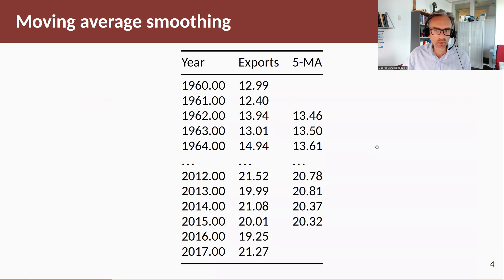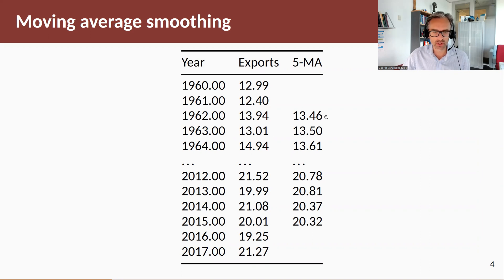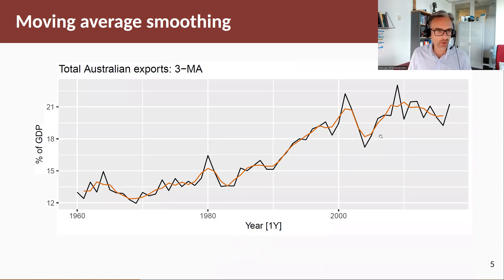Suppose that we want to implement a moving average of order 5. We take the first five values from 1960 to 1964, take the average of those and get 13.46. Then 13.5 is the result of taking the average of the next five values, and so on. Let's have a look at the graphical representation of this.